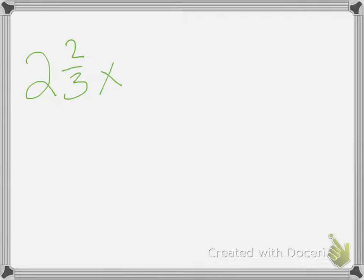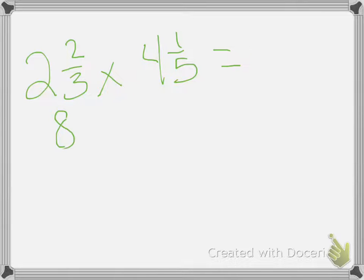At the bottom, you are multiplying mixed numbers. Number three is two and two-thirds times four and one-fifth. To convert: three times two is six, plus two is eight, over three. Then five times four is twenty, plus one is twenty-one, over five.